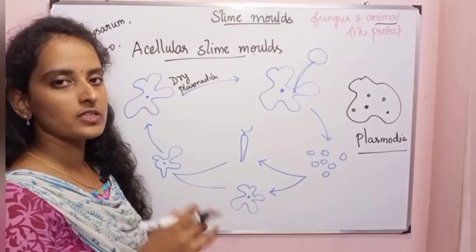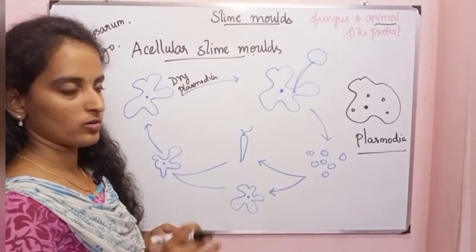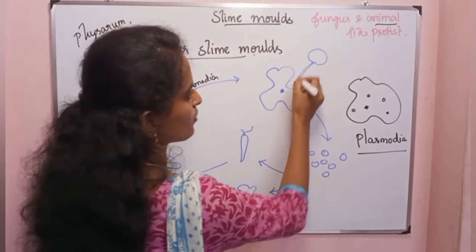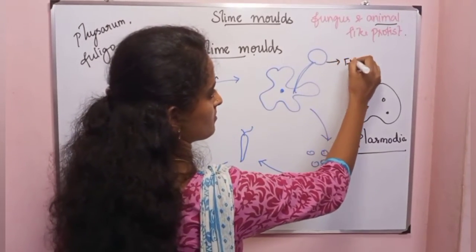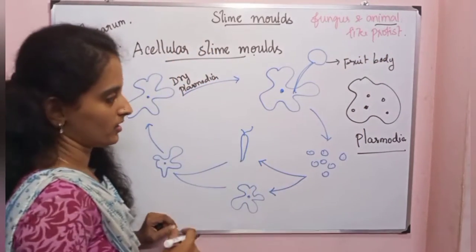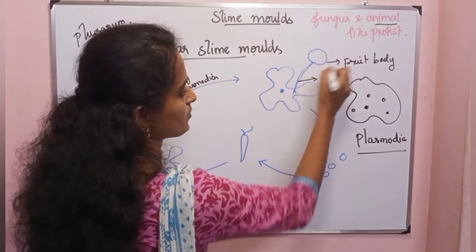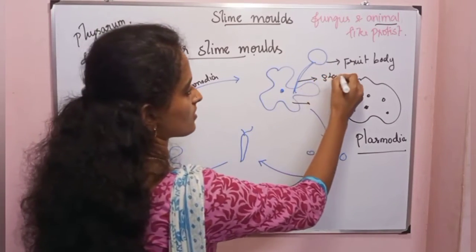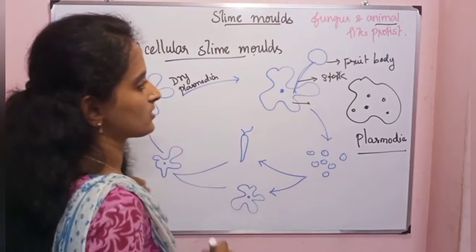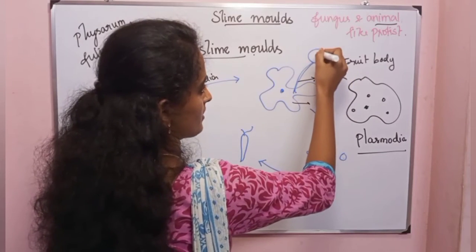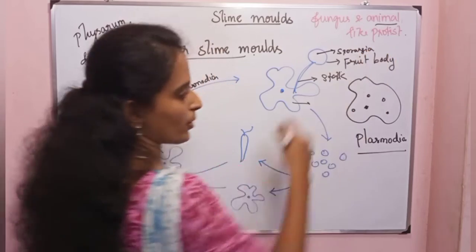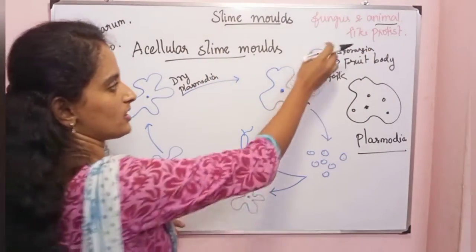Under unfavorable conditions, the plasmodia loses moisture and forms a fruit body. The fruit body consists of a stalk (stock) and a base structure — the sporangia forms at the top of the fruiting body on the stalk.